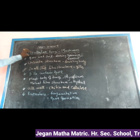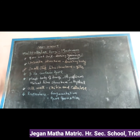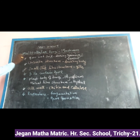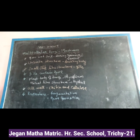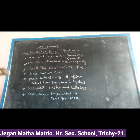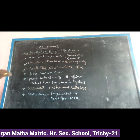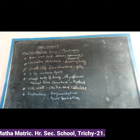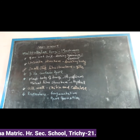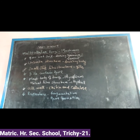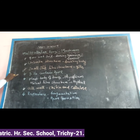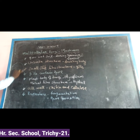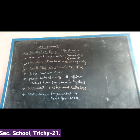Multicellular fungi are called mushrooms. Mushrooms grow in soil. They develop during the rainy season and have an umbrella-like structure. This umbrella-like structure is called the fruiting body.